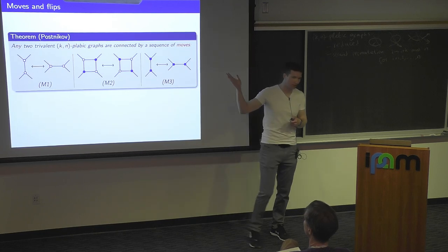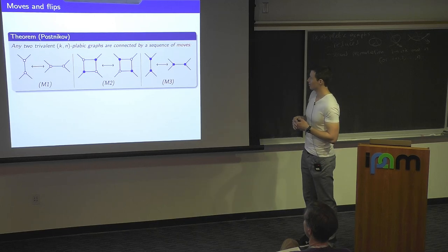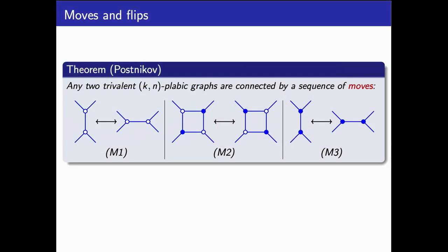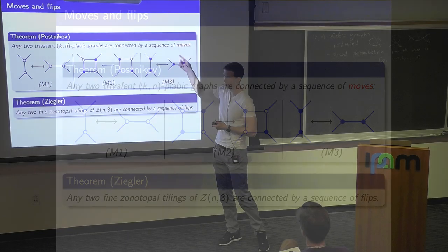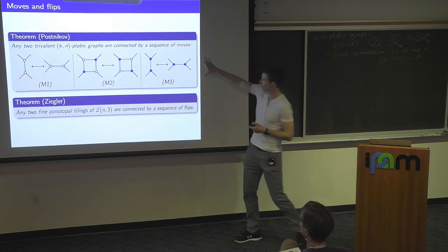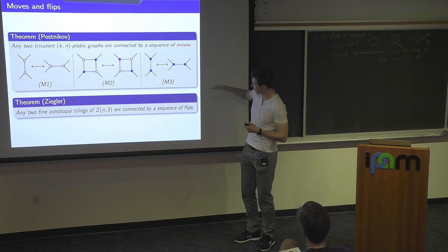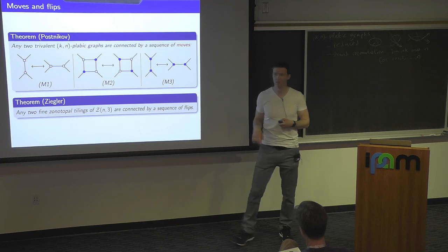On the plebik graph side, there is this theorem for the disk due to Postnikov: any two plebik graphs which are reduced and have the same strand permutation can always be related to each other by a sequence of moves. There is a similar theorem due to Ziegler: any two fine zonotopal tilings are connected by flips. You can ask what is the relation between these two theorems — in some sense, this one implies the other, because the moves for plebik graphs are horizontal sections of flips for fine zonotopal tilings.